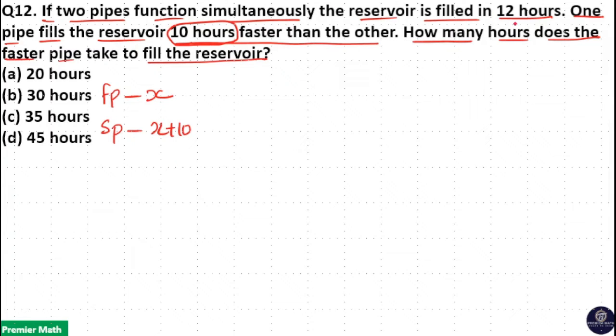The question clearly says that if both pipes work together, it will take 12 hours to fill the reservoir. That means the LCM of X and X plus 10 should be a multiple of 12. That is, here, the LCM of X and X plus 10 is 12X.